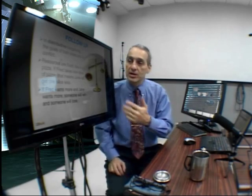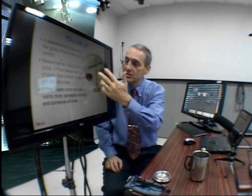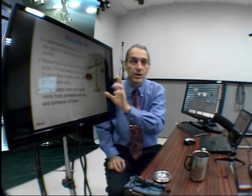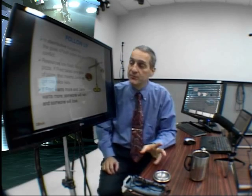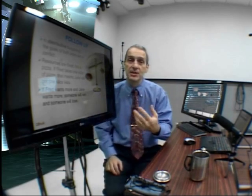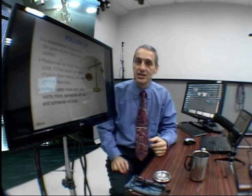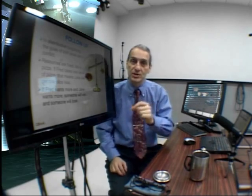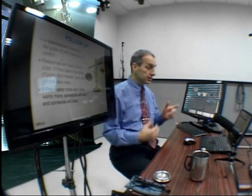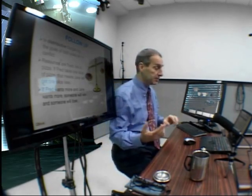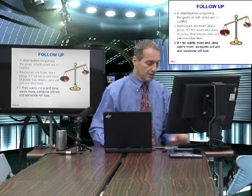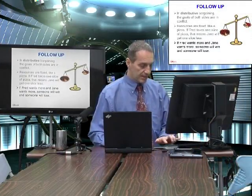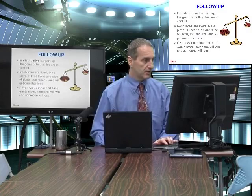So I use the scale to show one side goes up, one side goes down — there's just no way to stop it. Or the pizza: if you get something, I get something less. And in Fred and Jane's case, a very small amount, so they're both going to end up being hungry no matter what we do.